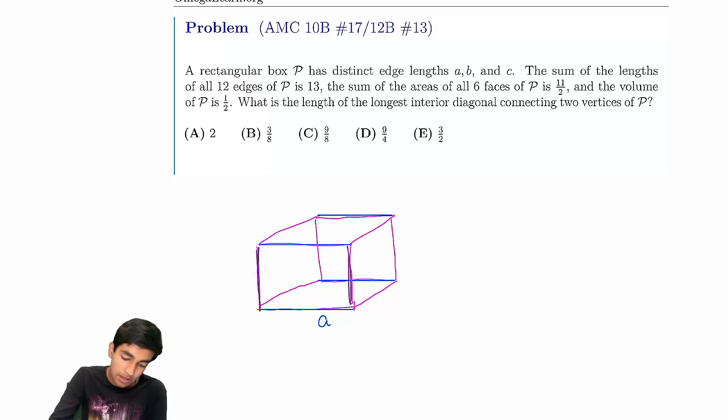Similarly, that's going to be equal to that, which is equal to that, which is equal to that. All four of those edges are also going to be equal. Let's call them all b.